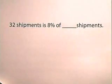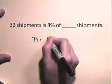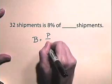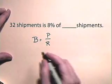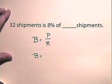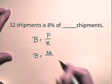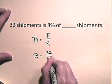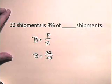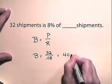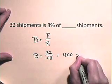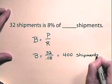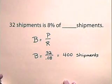Now let's look at two examples of finding base. 32 shipments is 8% of blank shipments. We know that base is equal to part divided by rate. The base is going to be the part, which is 32, divided by the rate, which is 8% written as a decimal, 0.08 — 8 one-hundredths. So 32 divided by 0.08 is 400. So the base is 400 shipments. Thirty-two shipments is 8% of 400 shipments.